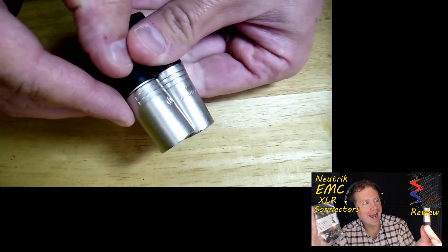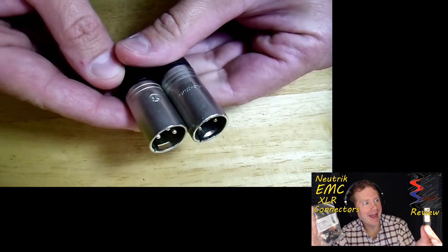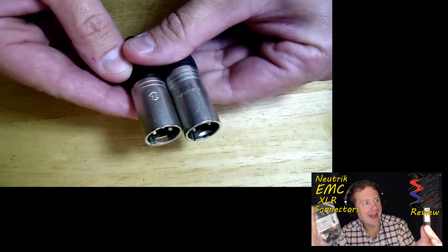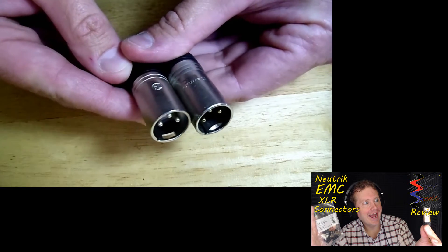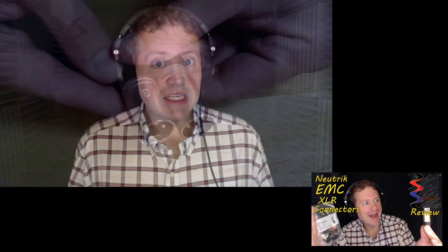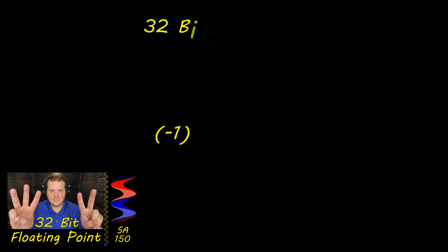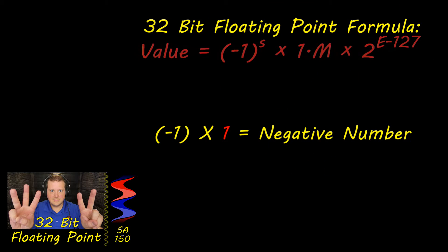On the MXX connector, the latch has been changed to an indentation which reduces damage done to the XLR casing. EMC connectors are ideal in three different scenarios: RF rejection, ground loop elimination, and proper grounding.